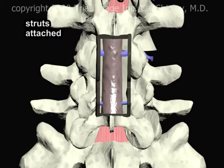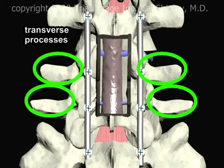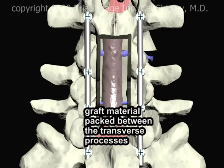Once the laminectomy has been completed, supporting struts are attached to the vertebra on either side by the same process detailed in Part 3 of this series. Next, a grafting procedure involving the transverse processes of the vertebrae is performed. Graft material is packed between the transverse processes on either side.